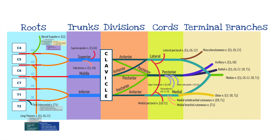As we discussed previously, the roots of the brachial plexus consist of C5, 6, 7, 8, and T1. These roots course between the anterior scalene and medius or middle scalene muscles. As they pass between these muscles, they form the trunks.